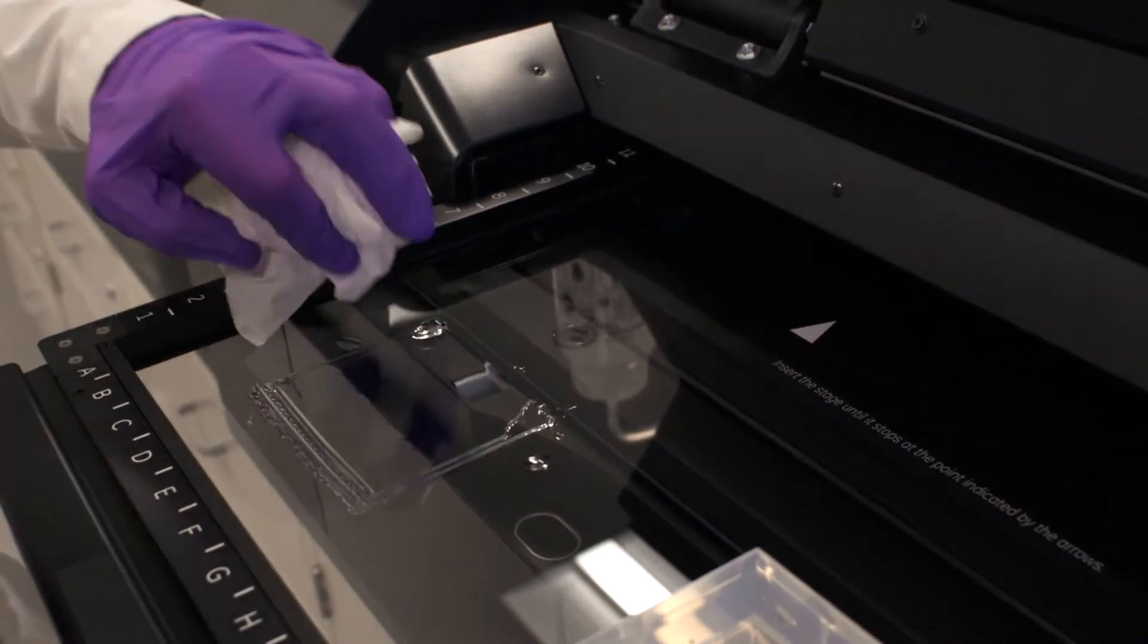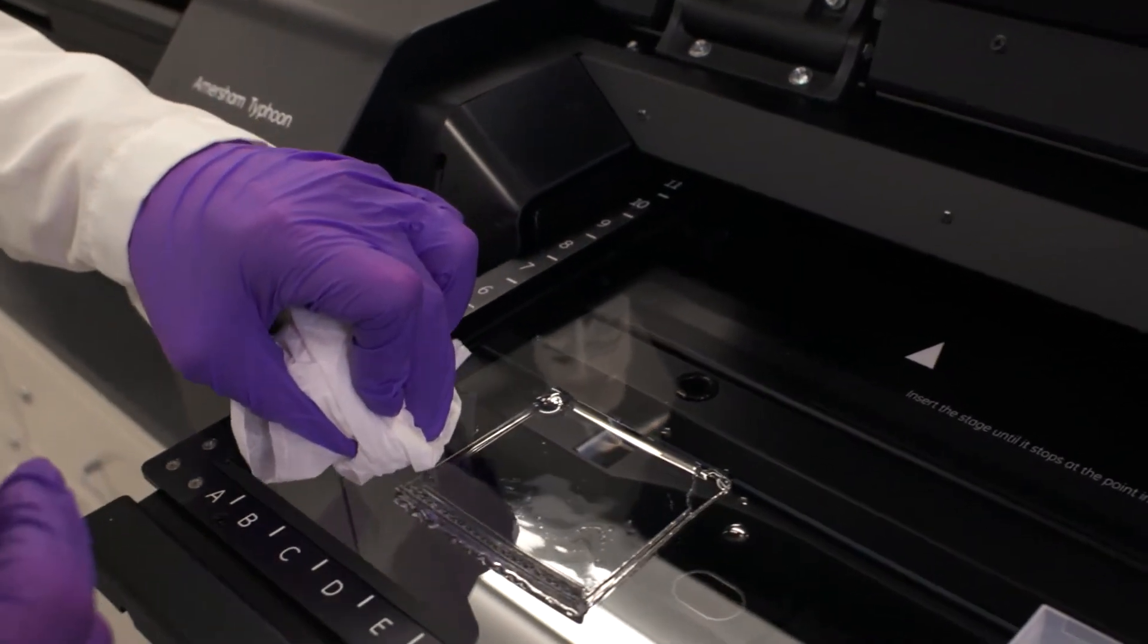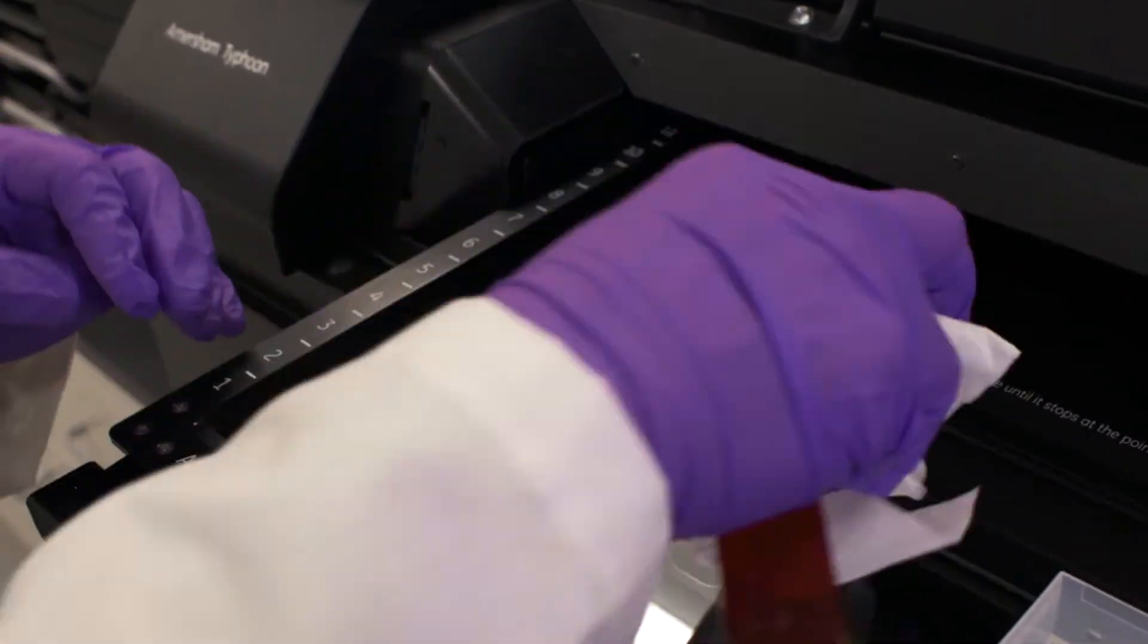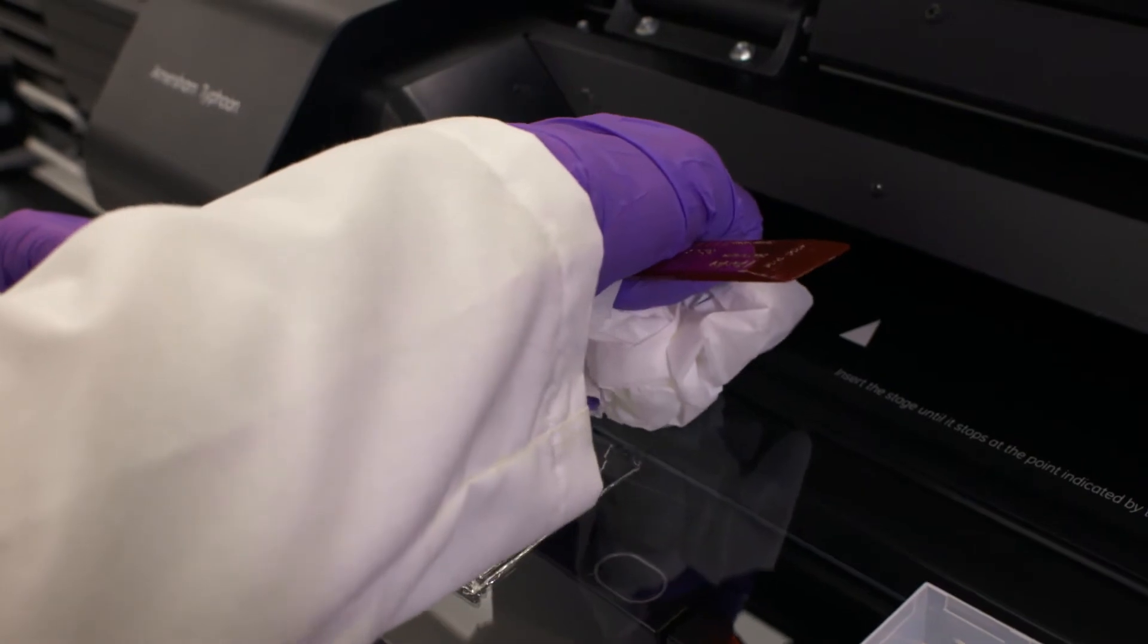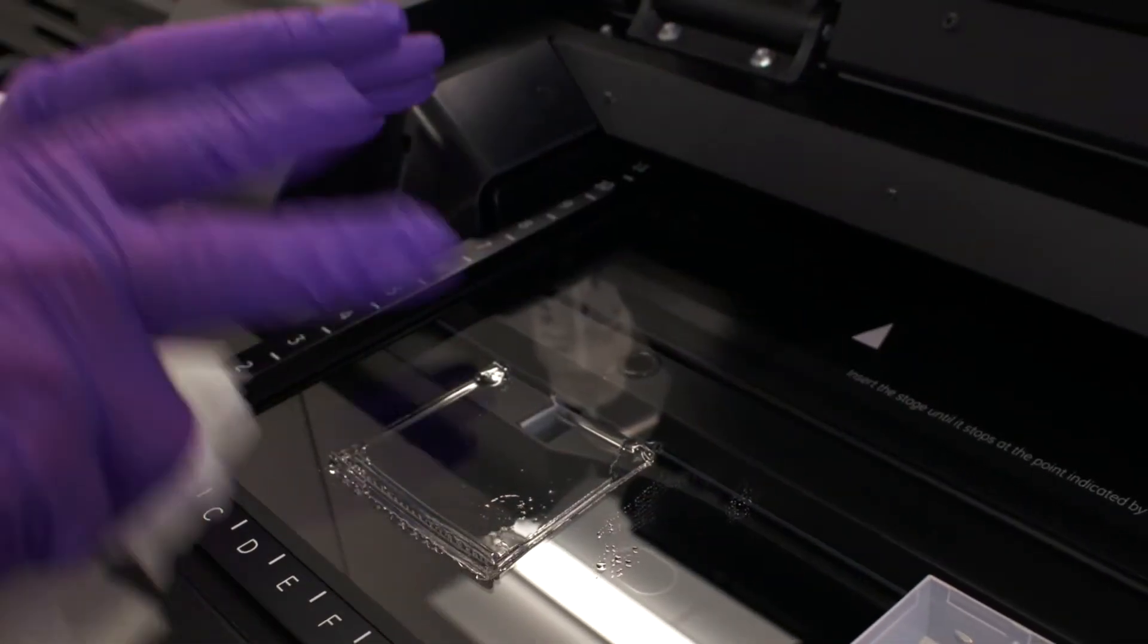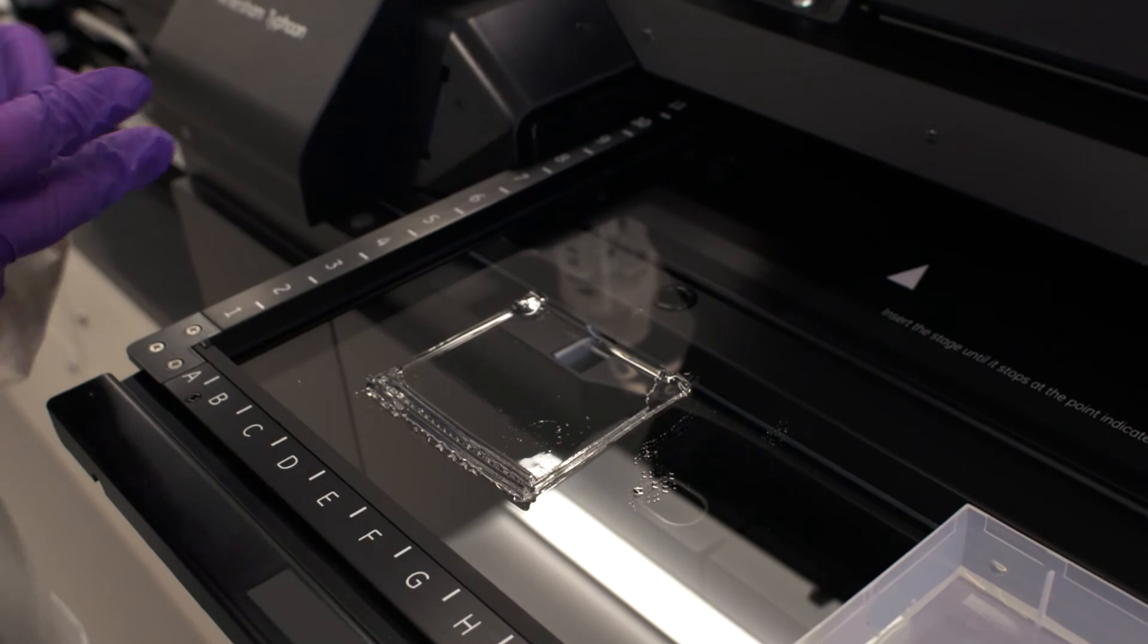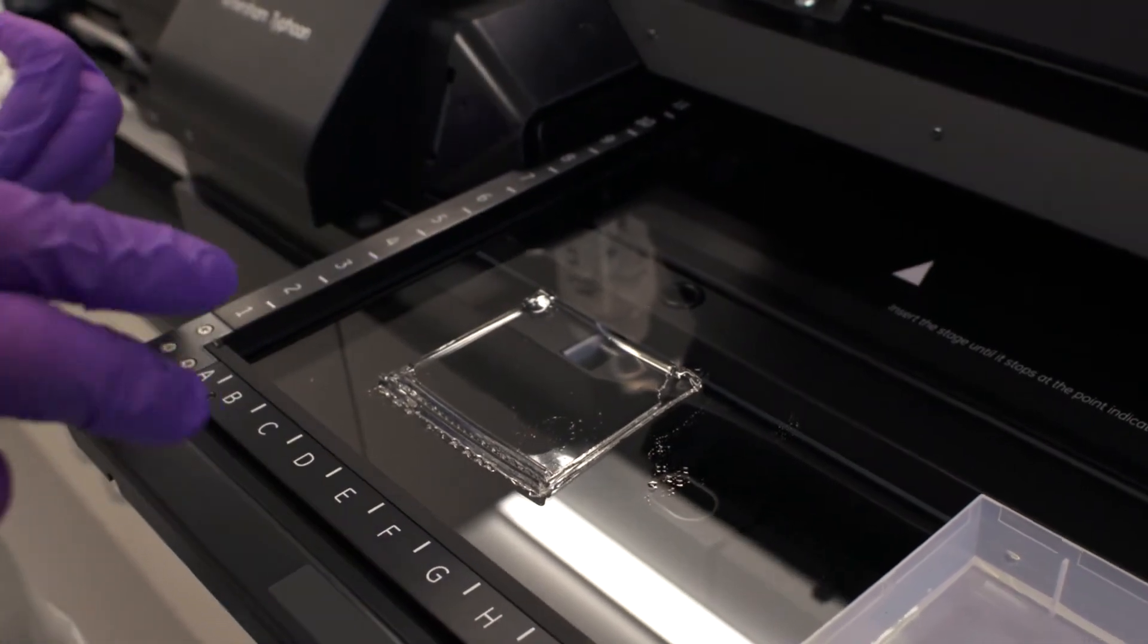And then just to help keep this in place, we're going to take a Kim wipe and go around the edge to suck up any excess liquid. This is going to pull that gel flush down against the stage. While looking here, we don't see any bubbles. We're happy.